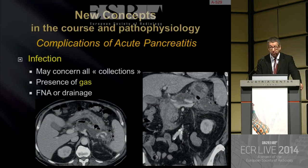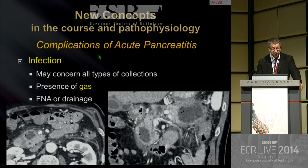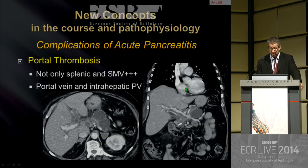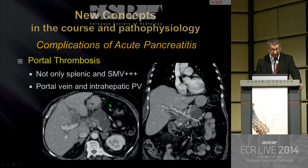Regarding complications of acute pancreatitis, infection may concern all collections. Presence of gas is the main CT finding indicating infection. Fine needle aspiration or drainage may also confirm the diagnosis of infected pancreatitis. In this case, you can see intrapancreatic ANC with clearly gas in the collection in the head of the pancreas — clearly infected acute necrotic collections. Portal thrombosis is a common situation in acute pancreatitis, not only for splenic and superior mesenteric veins but also in intrahepatic portal veins.